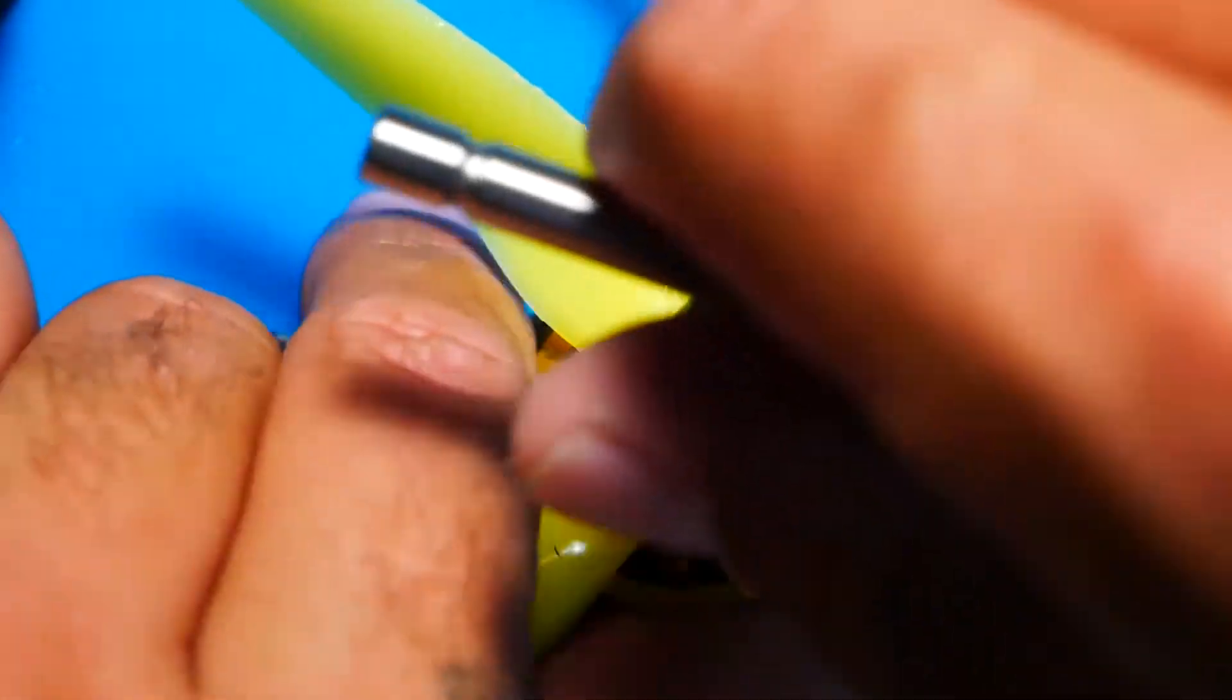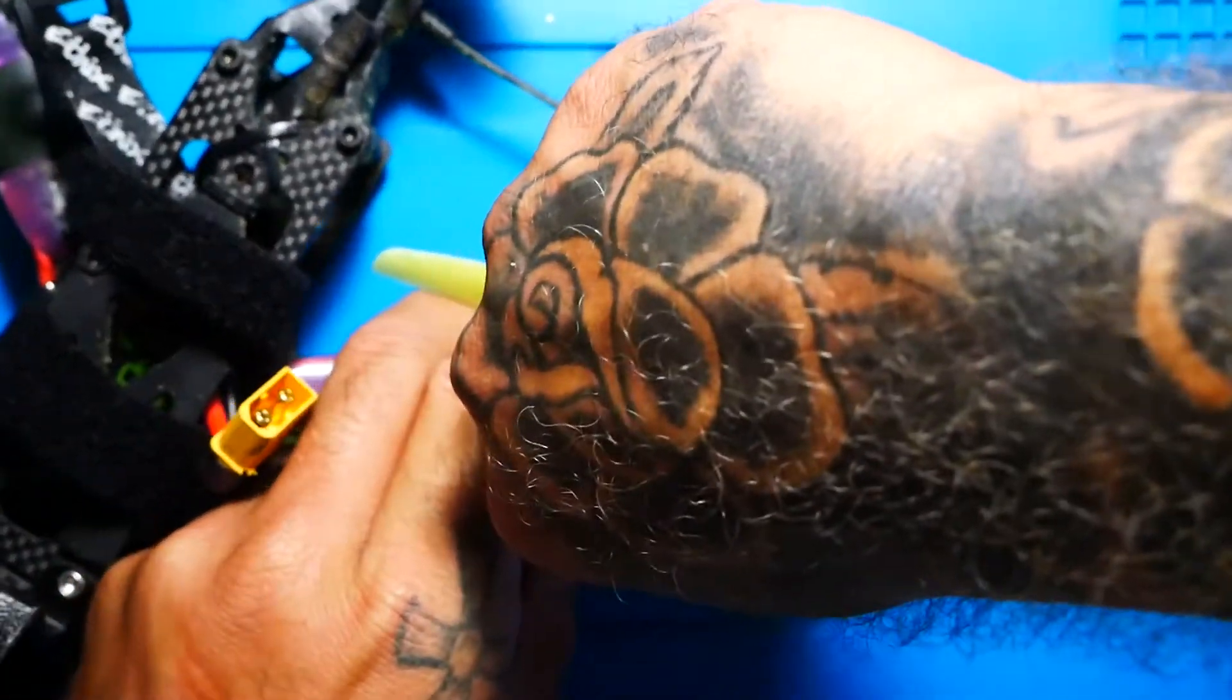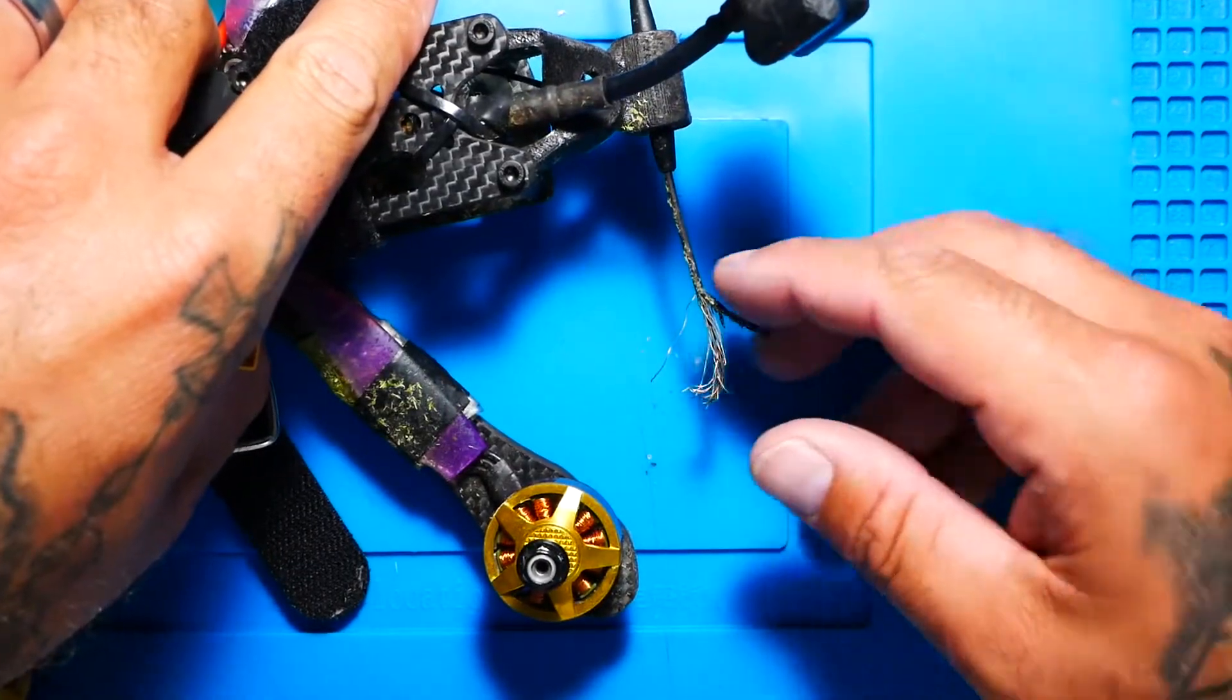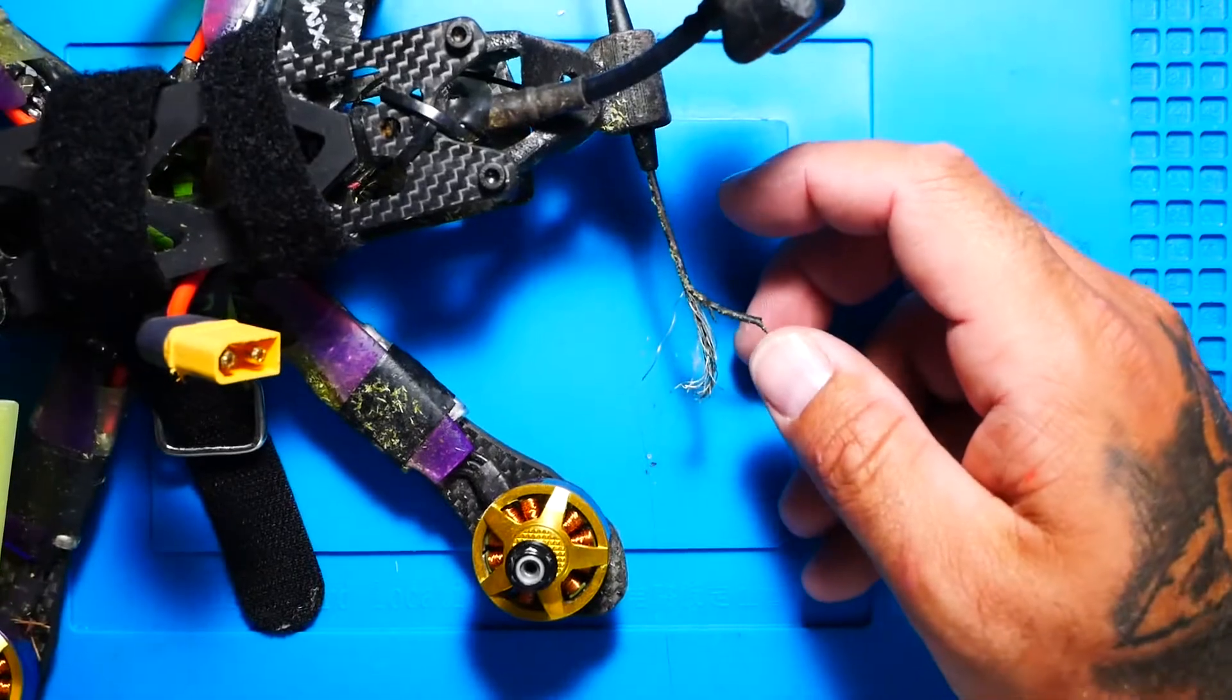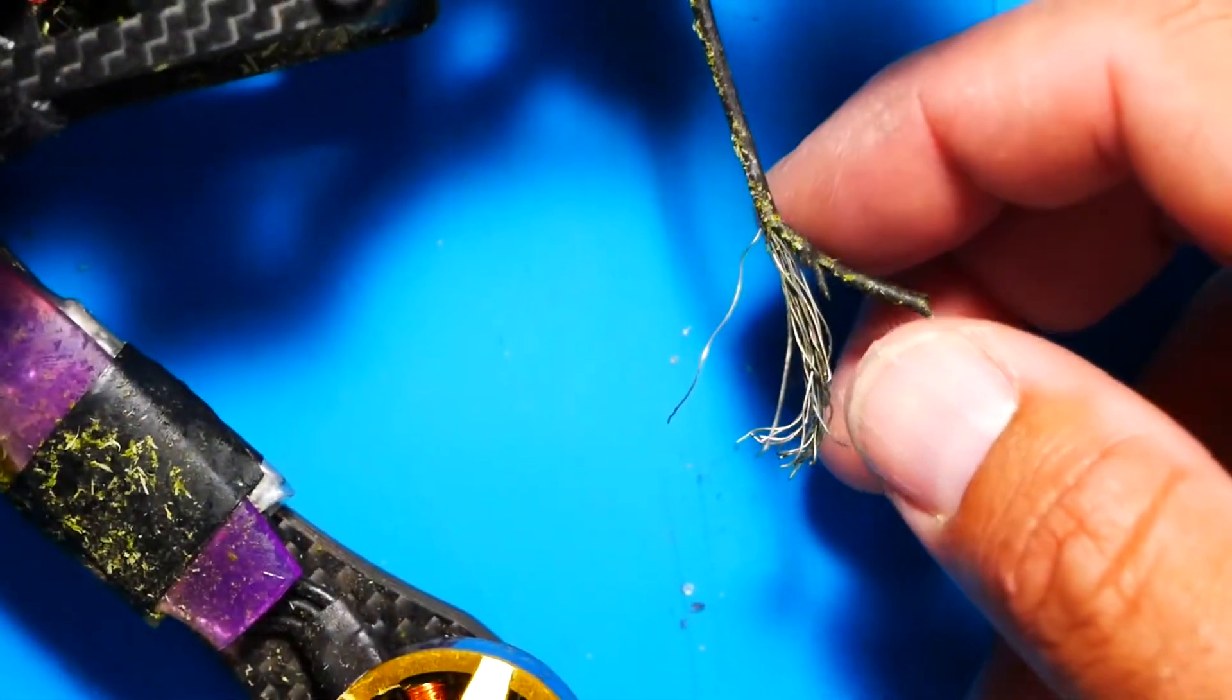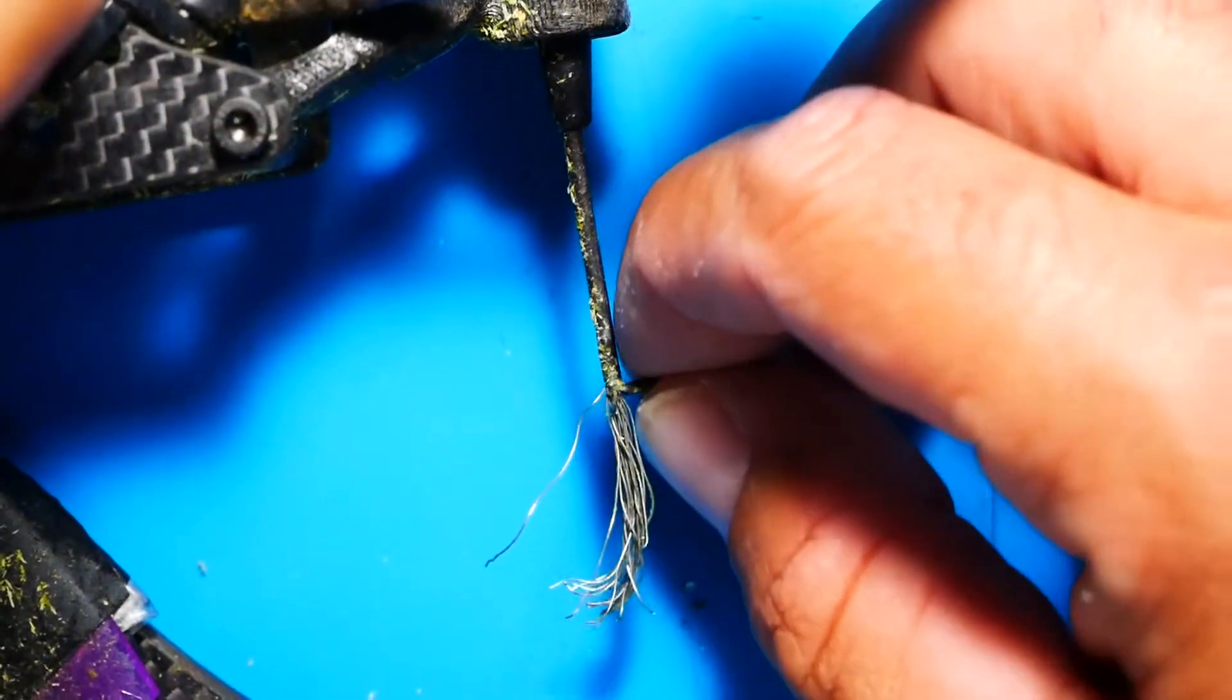Alright, so first thing we're going to do is get this prop out of our way. The very first thing we need to do is get rid of this old piece of heat shrink or silicone, whatever this is exactly, we're going to get rid of this first.